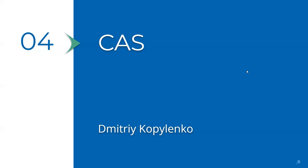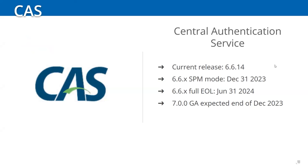CAS will be presented by Dmitry Kopalenko. The current version of CAS is 6.6.14. The 6.6 series is scheduled to go into security-patch-only mode on December 31st of this year, and the full end-of-life for 6.6 has been extended to the end of July next year. The next major release, CAS 7, is scheduled to reach GA at the end of December — in just a couple of weeks.